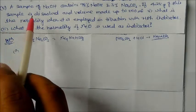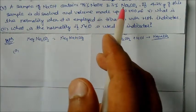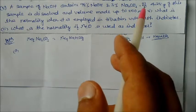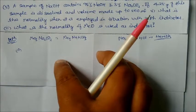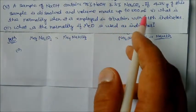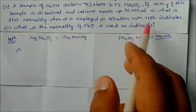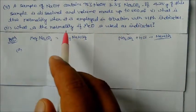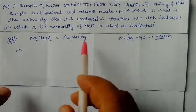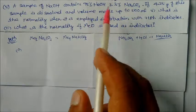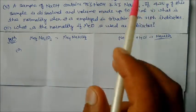Here we see this problem: a sample of sodium hydroxide contains 95% NaOH and 3% sodium carbonate. If 4.25 grams of this sample is dissolved and volume is made up to 500 ml, what is the normality when employed in titration with phenolphthalein indicator? In the first case, when reacting with any acid, both sodium hydroxide and sodium carbonate are used up.